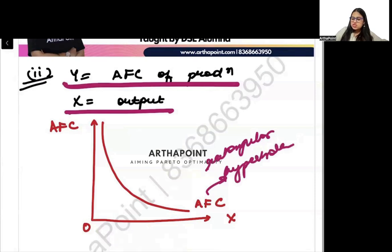Just suppose fixed cost is 100 and output is one unit, so 100 divided by 1 will be 100. Now suppose fixed cost is 100, output is 2, so 100 divided by 2 will be 50.